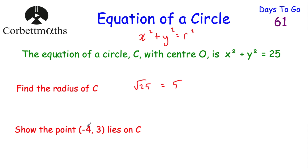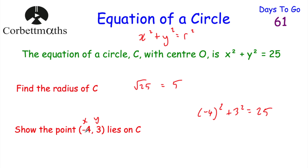The next part asks us to show that the point (−4, 3) lies on C. To show a point lies on the circle, we substitute those coordinates into the equation. So x is −4 and y is 3. We get negative 4 squared plus 3 squared, which should equal 25. Negative 4 squared is 16, and 3 squared is 9. 16 plus 9 equals 25, so 25 equals 25 — that point does lie on C.